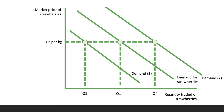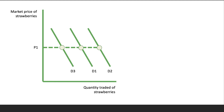Equally, there could be a fall in demand - an inward shift - meaning that less is bought at the same price. Demand conditions might have changed such that there are fewer consumers willing and able to buy strawberries in the market. So a change in factors other than the price of the product itself will bring about a shift in the demand curve. A leftward movement is a decrease in demand, an inward shift. D1 to D2 is an outward shift; D1 to D3 is an inward shift of demand for the same price level.